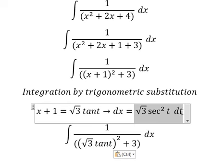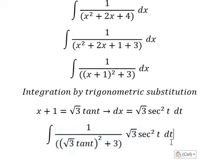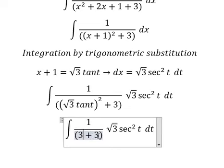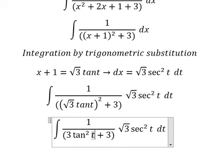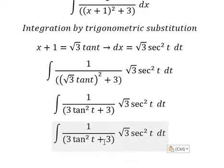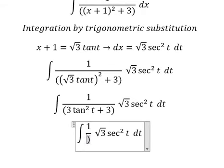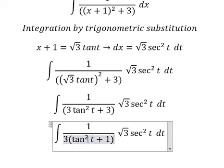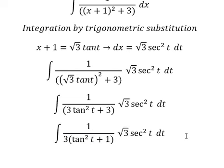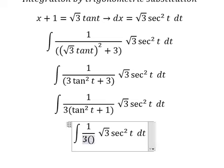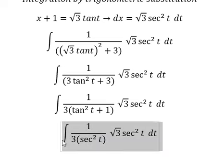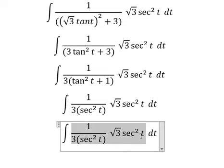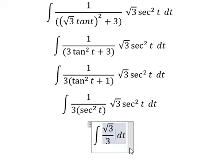We replace dx with this expression. So this one gives us 3 times t squared. The 3 and 3 we can do factorization. We replace this one by secant squared of t. Now we can simplify, and we are left with only the square root of 3 over 3.